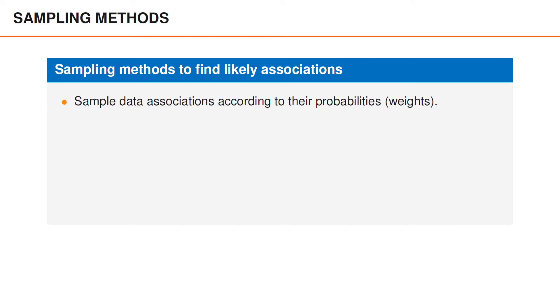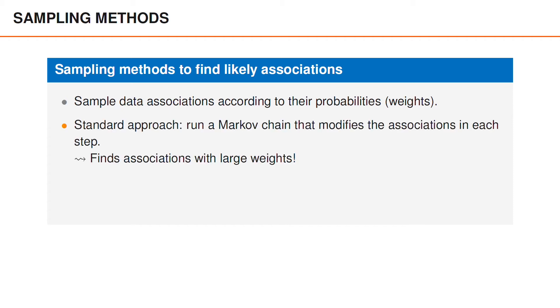An alternative approach that elegantly leverages knowledge about the predicted object distribution is to sample associations according to their probabilities, that is, according to their weights. To sample associations we normally use some type of Markov chain Monte Carlo method, which means that we run a Markov chain that modifies the associations in each step. A nice consequence of sampling associations from their distribution is that we will find associations with large weights.